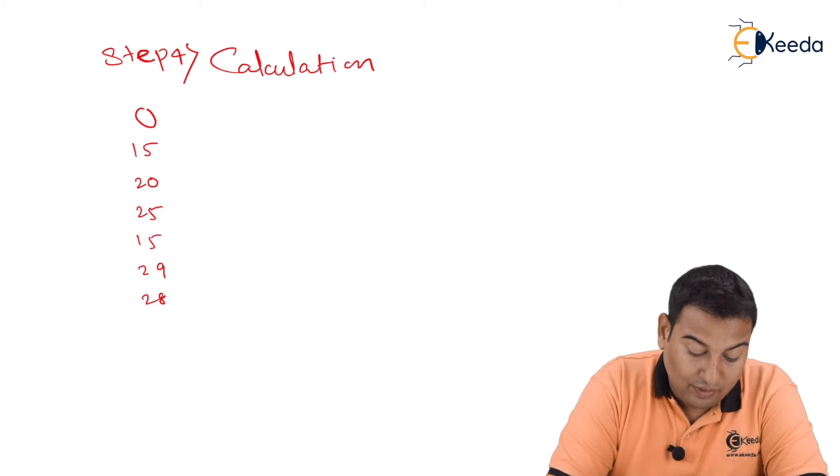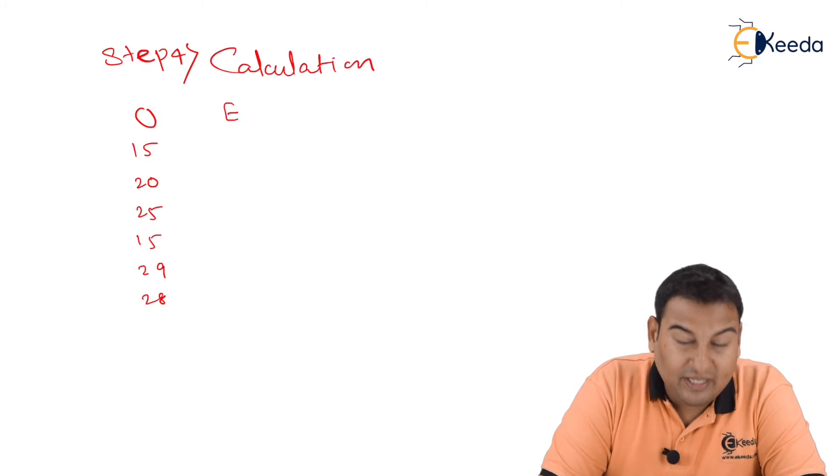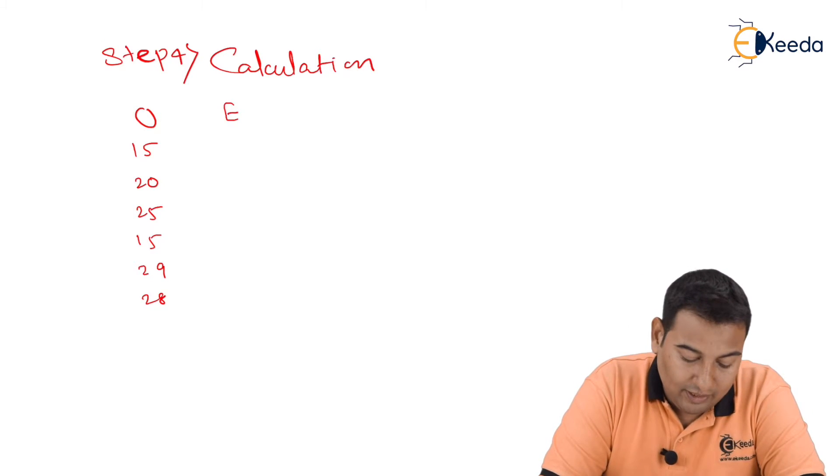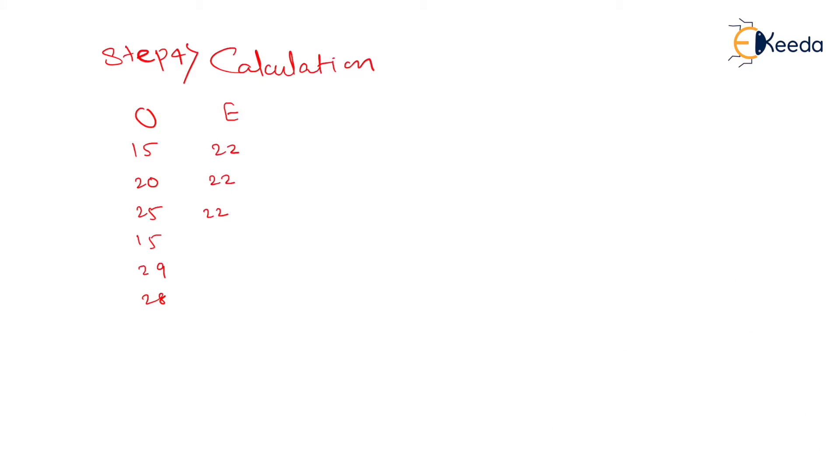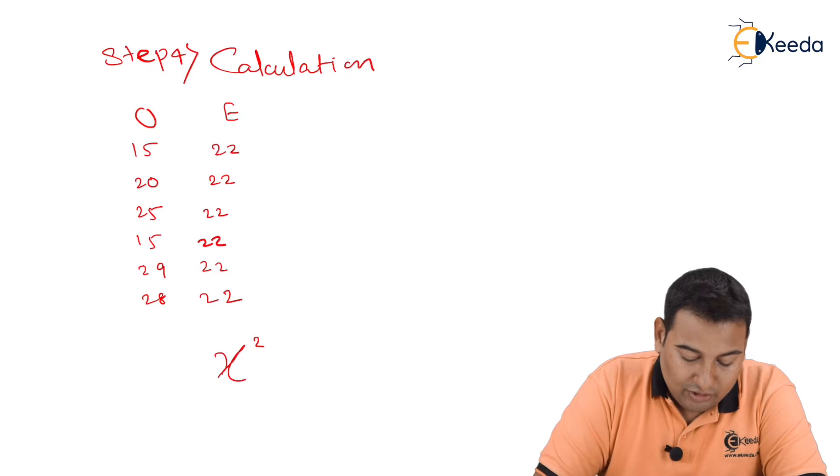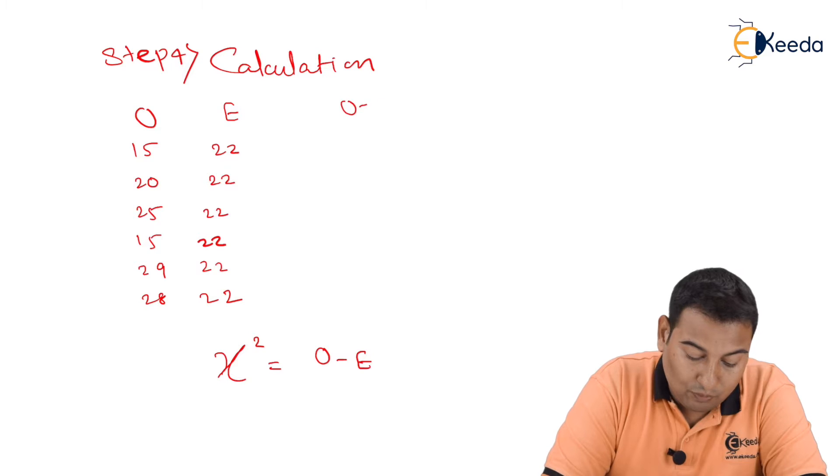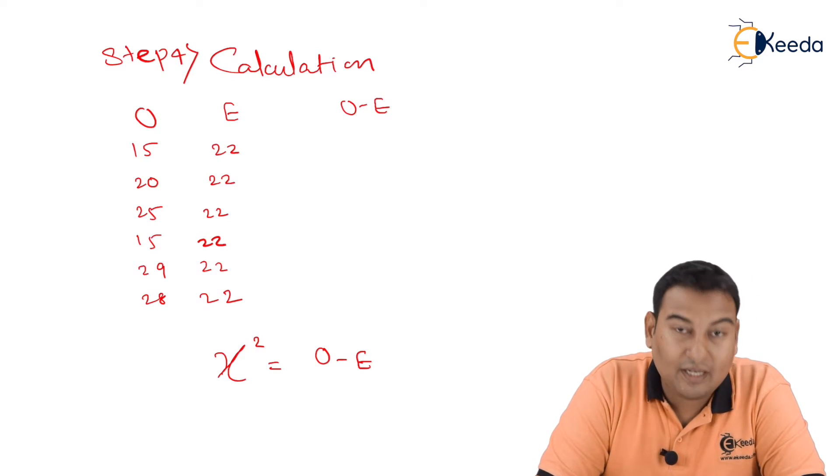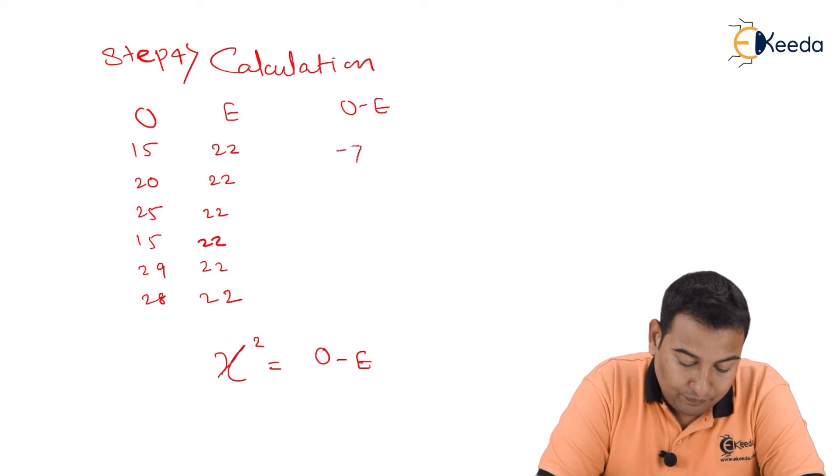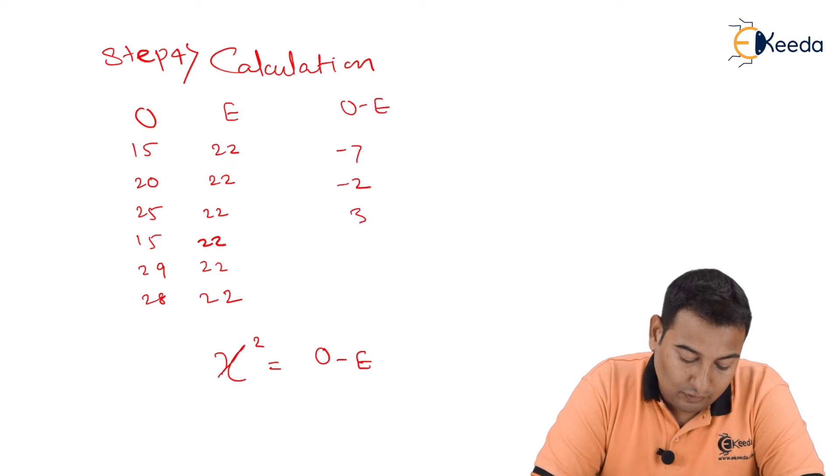So these are the observed values. Expected - I'm expecting all the numbers should appear equally, so that is 22. The formula for chi-square is: first of all you need to find out observed minus expected. So let's find out observed minus expected: 15 minus 22 is minus 7, this is minus 2, 3, minus 7, 7, and lastly 6.